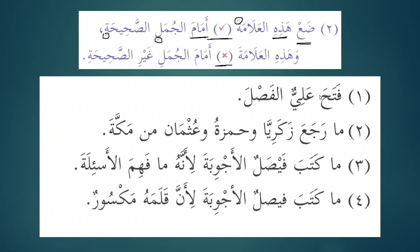Fataha aliyunil fasla — Ali opened the classroom. Now we can see that this is Aliyun, and after that we have 'al'. In modern standard Arabic it's okay, but in the Quran we have to read it as Fataha aliyunil fasla. Is this sahih or ghair sahih? Hadha ghairu sahihin — this is incorrect.